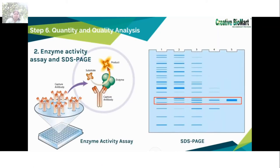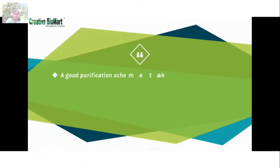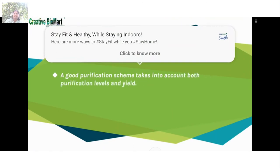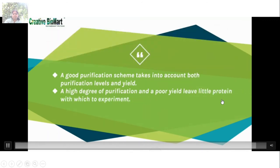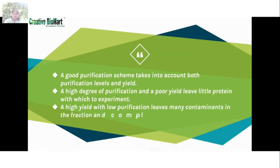Besides qualitative analysis of protein purification, we also need to quantify the target protein at each step. If the target protein is an enzyme, we can determine protein concentration by enzyme activity. If the target protein does not have enzyme activity, we can semi-quantify it through SDS-PAGE gel, which can analyze the percentage of the target protein in the total sample. A good purification scheme takes into account both purification levels and yield — high purification with poor yield leaves little protein to work with, while high yield with low purification leaves many contaminants and complicates interpretation.